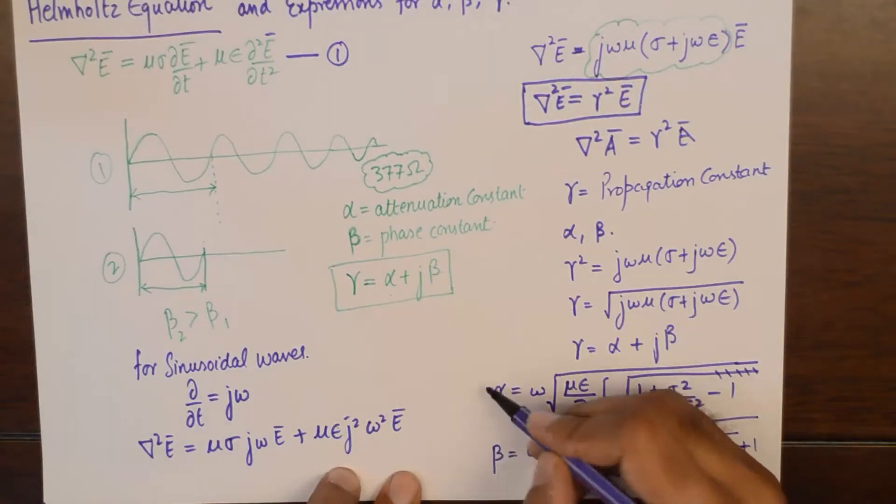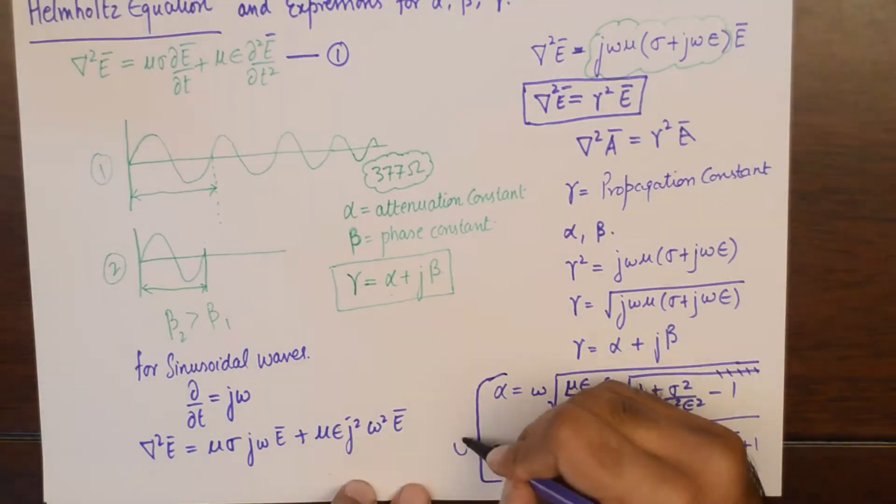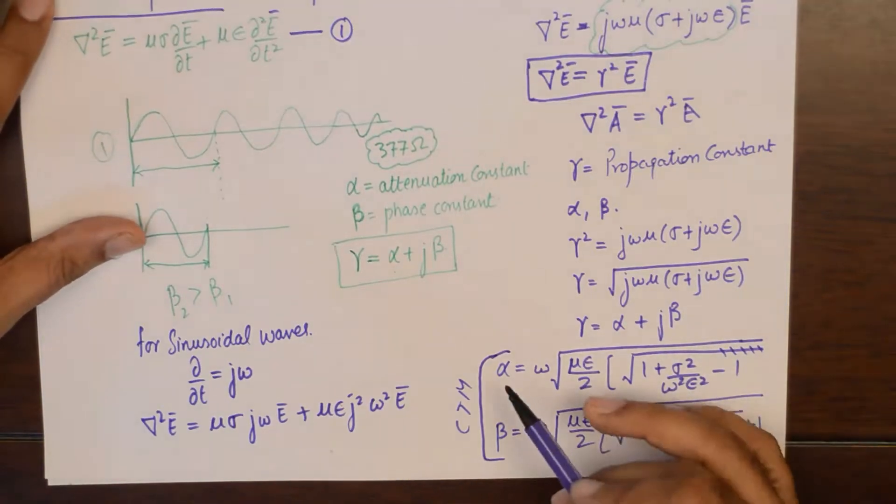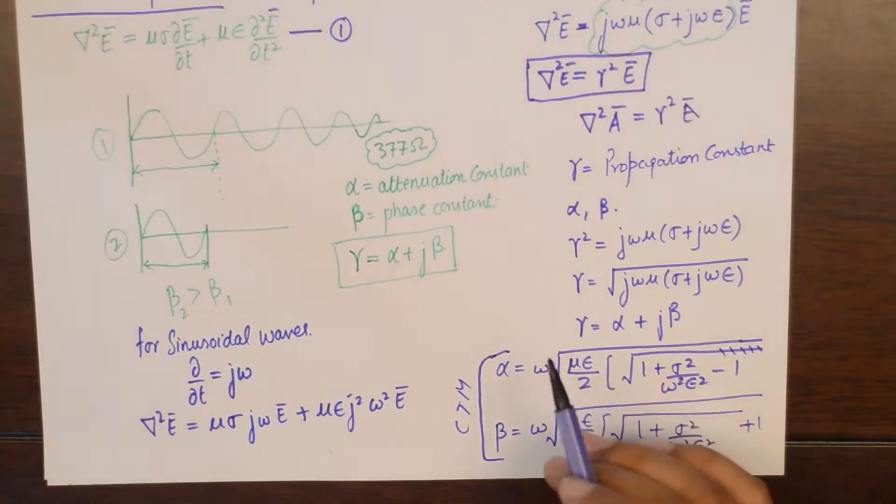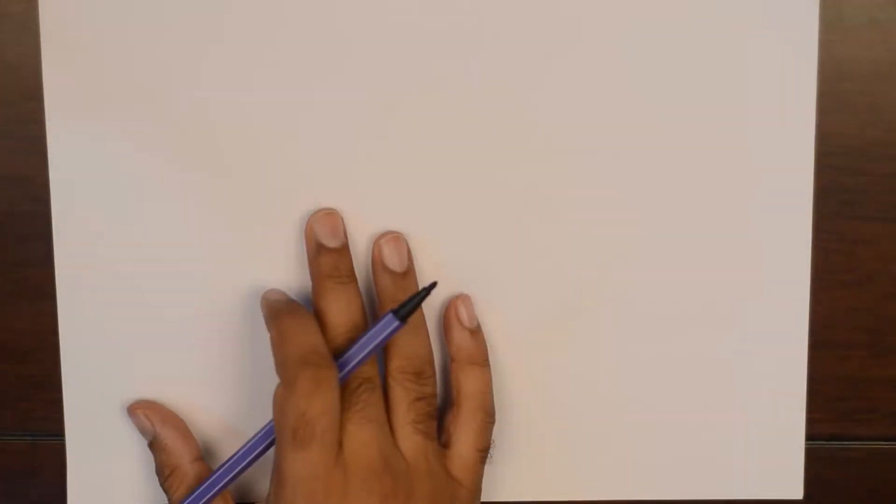Now I would say you could commit these values to memory, because there is no use extracting these values and separating the real and imaginary parts from this cumbersome term. But we can commit these two things to memory.